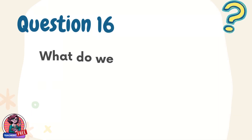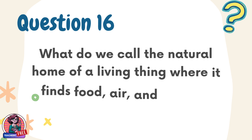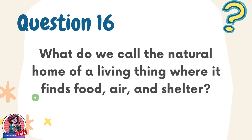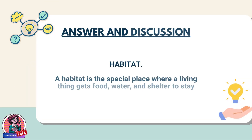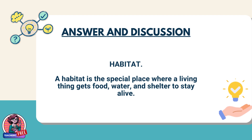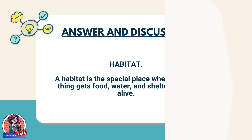Question 16. What do we call the natural home of a living thing where it finds food, air, and shelter? Answer: Habitat. A habitat is the special place where a living thing gets food, water, and shelter to stay alive.